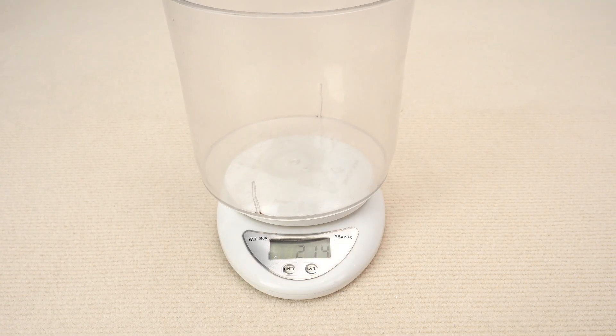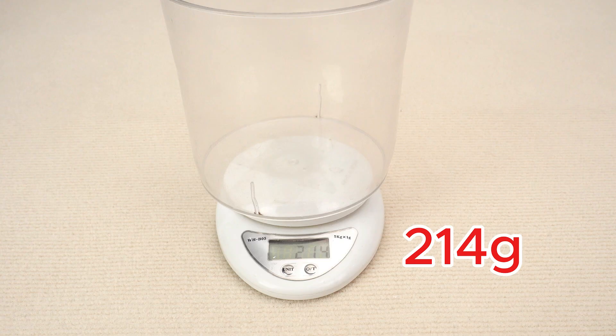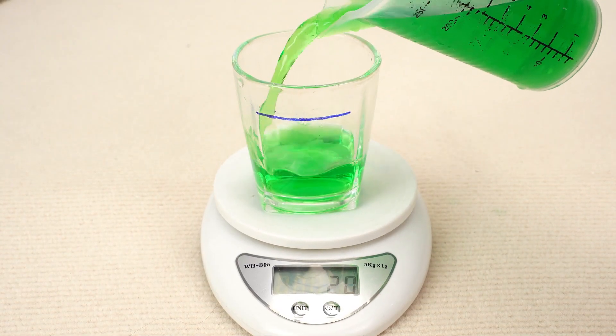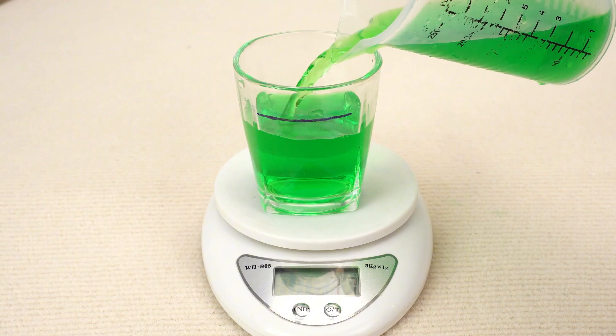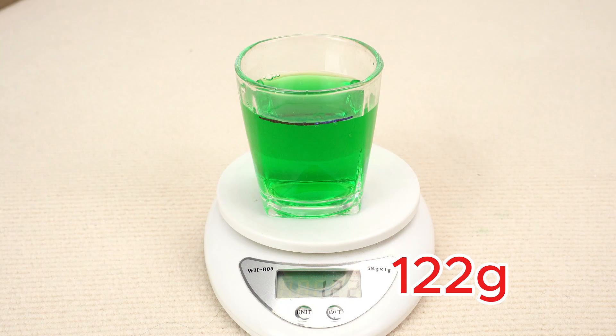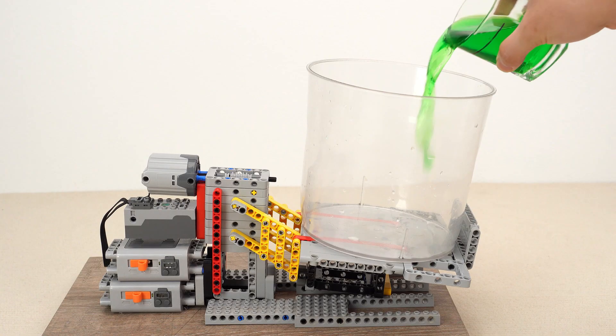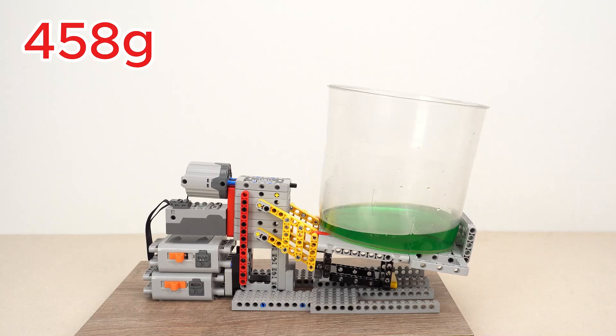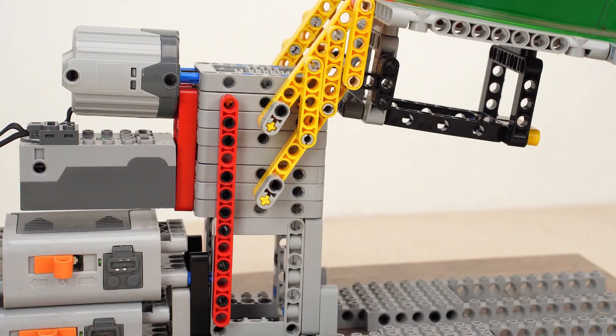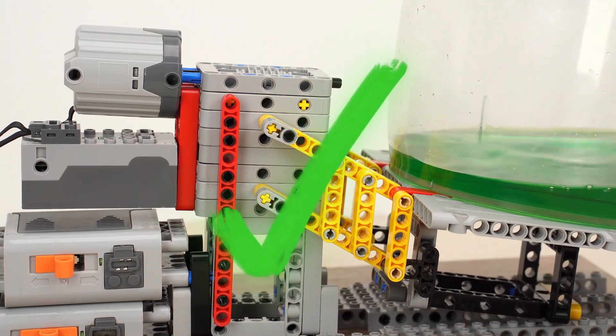I have a water jug weighing 214 grams and 122 grams of colored water. Pour in 2 cups of water. Now, it has to lift 458 grams. A bit heavy, but it's holding up well.